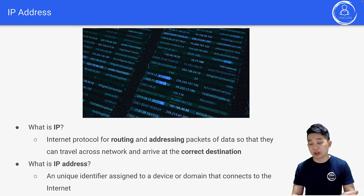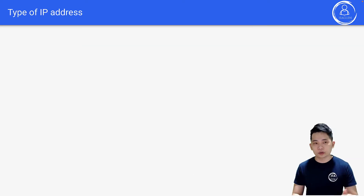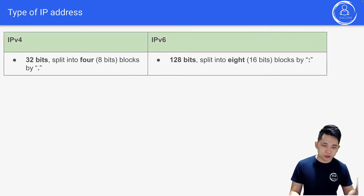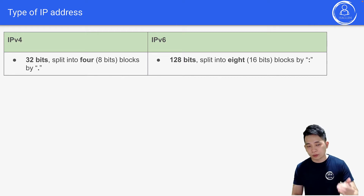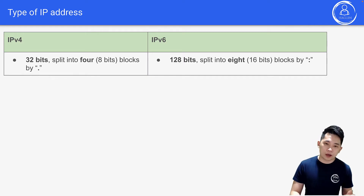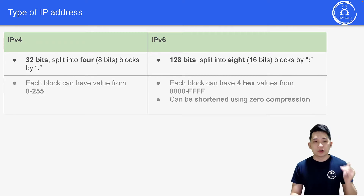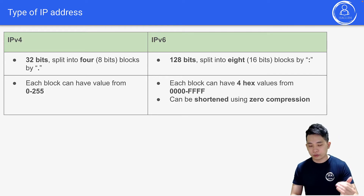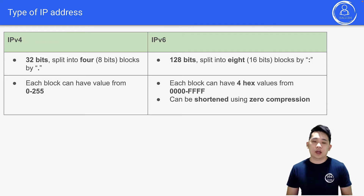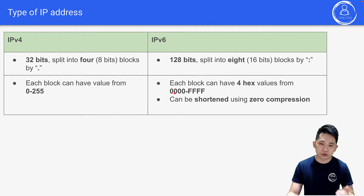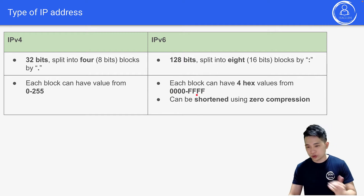Let's look at the types of IP addresses. IPv4 has 32 bits split into four 8-bit blocks separated by dots. IPv6 is 128 bits split into eight 16-bit blocks separated by colons. For IPv4, each block can have a value from 0 to 255. For IPv6, each block can have four hex values from 0000 to FFFF, and it can be shortened using zero compression.